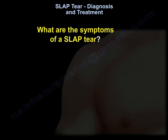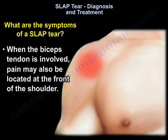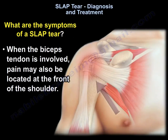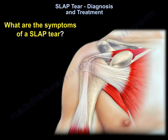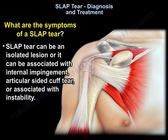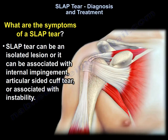When the biceps tendon is involved, pain may also be located at the front of the shoulder. A SLAP tear can be an isolated lesion or it can be associated with internal impingement, articular-sided cuff tear, or associated with instability.